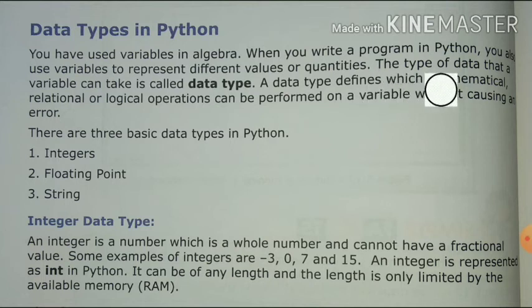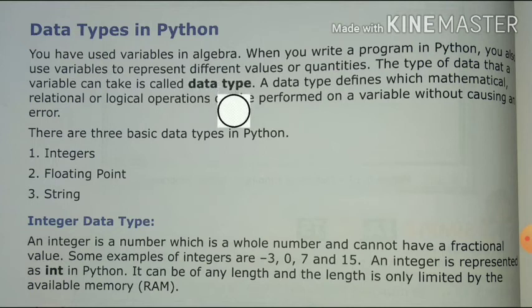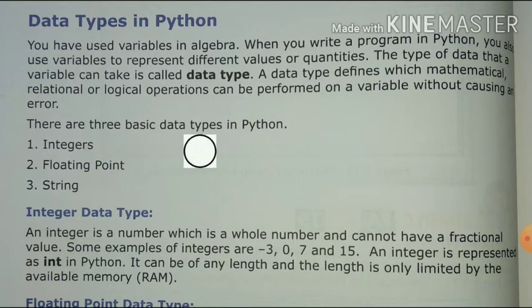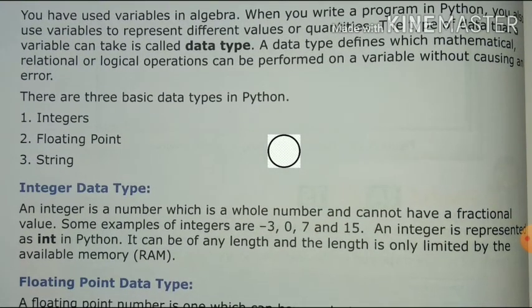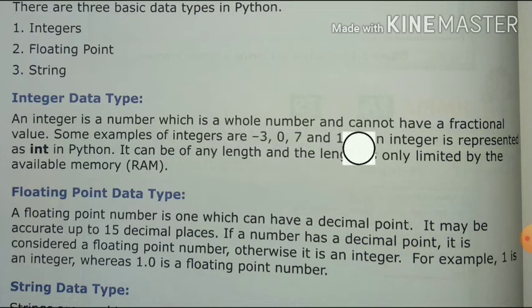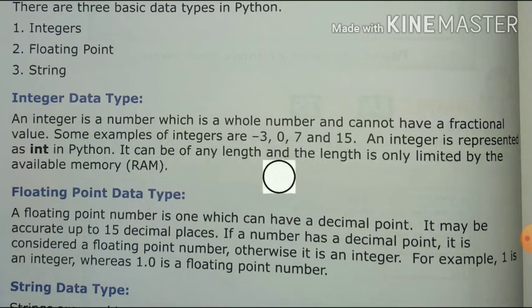The type of data that a variable can take — what type of data a variable is taking — is called its data type. Data type can be a point, text, positive, or exact number. A data type defines which mathematical, rational, or logical operation can be performed on a variable without causing an error. There are three types of basic data types in Python: first, integer; second, floating; and third, string. Integer data type represents the whole number and cannot have a fractional value. The whole number is not a fractional value — it can be minus, plus, or zero. Integer is represented as int in Python and can be of any length, limited only by the available memory.